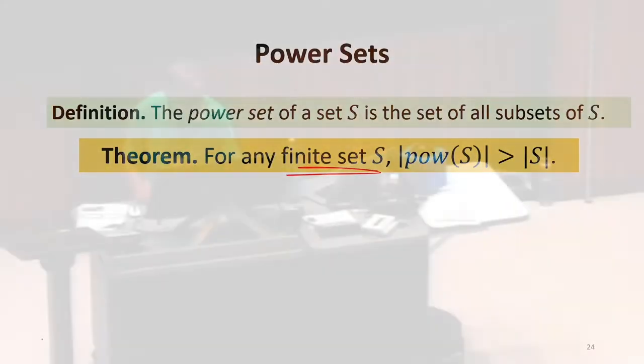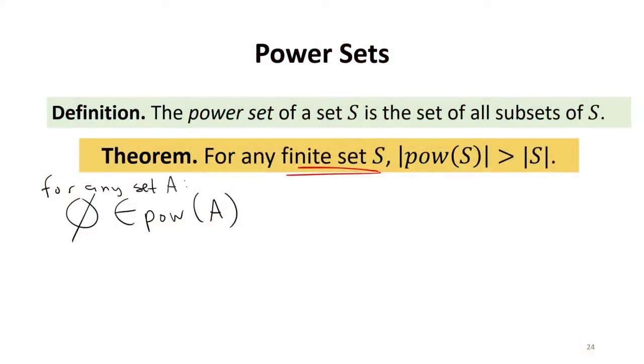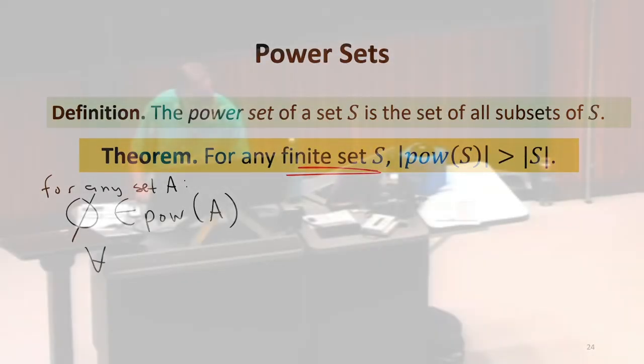For any set, the power set does include the empty set. What else does the power set also include? The set S. It does, right? It includes a set with all elements of S. That means we've got maybe at least one element in the power set. It contains all the singleton sets. For every element of S, the singleton set is in the power set.